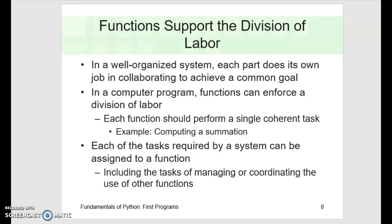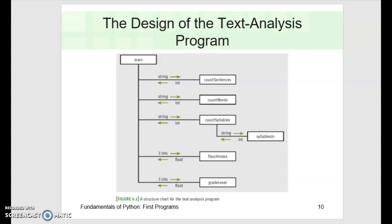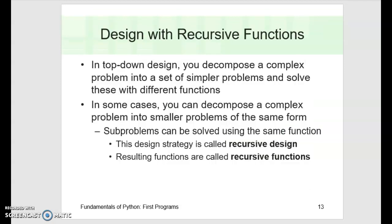Another thing that functions do well is support division of labor. In a well-organized program, you can separate tasks, and then others can work on each job, which allows collaboration to achieve a common goal. Top-down design, as referred to in the textbook, starts from the global view of the program and breaks it down into smaller sub-problems. These sub-problems can then translate to functions because they're isolated algorithms that solve manageable sub-problems. This is what a text analysis program might look like when top-down design is used.